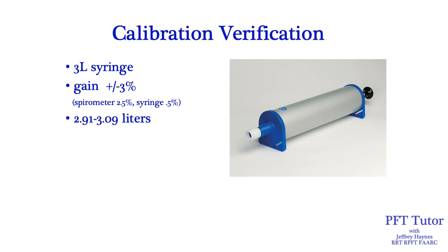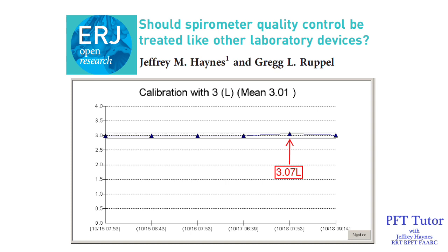I believe it is a myth, however, that if you do cal verification and your recorded values fall within the plus or minus 3% range, that means there is nothing wrong with your spirometer and everything is working fine. This is a case we had published in the European Respiratory Journal Open Research, asking whether spirometer quality control should be treated like other laboratory devices. One morning in my laboratory, I was doing cal verification and I got a reading of 3.07 liters, which is within the standard 2.91 to 3.09 range recommended by the ATS-ERS standards.